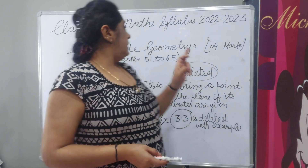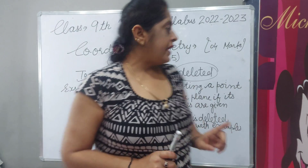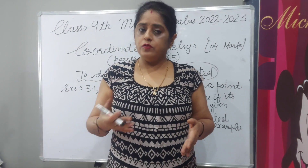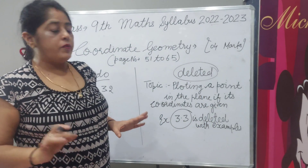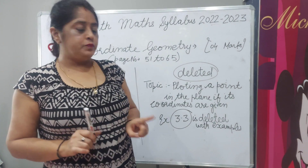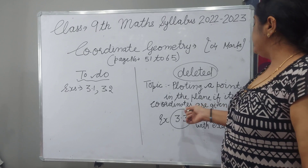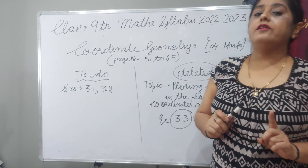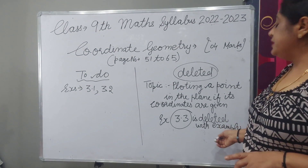From coordinate geometry, 4 marks paper will come. It is page number 51 to 65 in your NCERT book. You can tick in your NCERT book or note down in your copy. You have to do exercises 3.1 and 3.2. The deleted topic is: plotting a point in the plane if its coordinates are given, meaning exercise 3.3 is deleted for 2022-23 with examples.